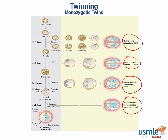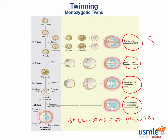For the Step 1 exam, remember that the number of chorions equals the number of placentas. A mnemonic you can use to remember what is being shared between these is SCAB: S is for separate everything, C for shared chorion, A for shared amniotic sac, and B for shared body if conjoined.